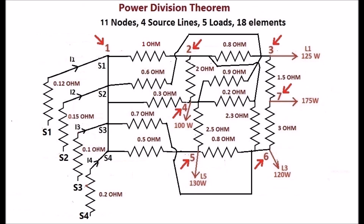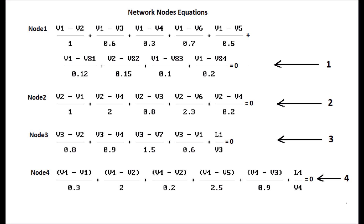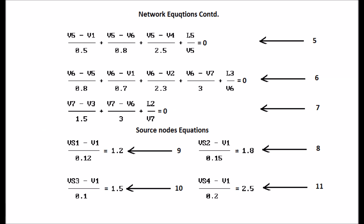Network nodes are 7 and source nodes are 4, as shown in the display. There are 11 node equations, as shown in the display, which must be solved for node voltages to find the operating points.